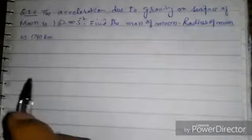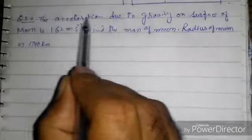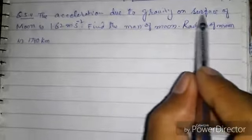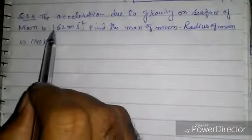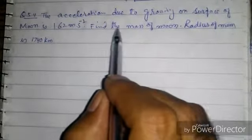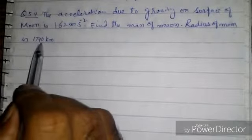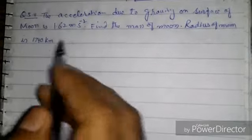Today we are going to solve question number 5.4. The acceleration due to gravity on surface of moon is 1.62 meter per second squared. Find the mass of the moon. Radius of moon is 1740 kilometer. Let's solve this.